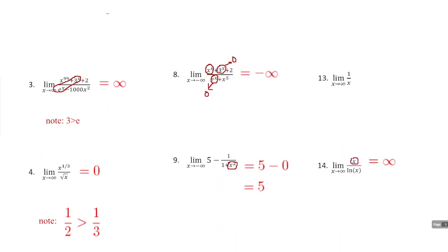Number thirteen has the limit as x approaches infinity of 1 over x — just your parent rational function. The denominator keeps getting bigger while the numerator stays one. Think about fractions like one half, one third, one fourth, one fifth — the values are decreasing toward zero. So when the denominator increases faster than the numerator, the limit as x approaches infinity is zero.